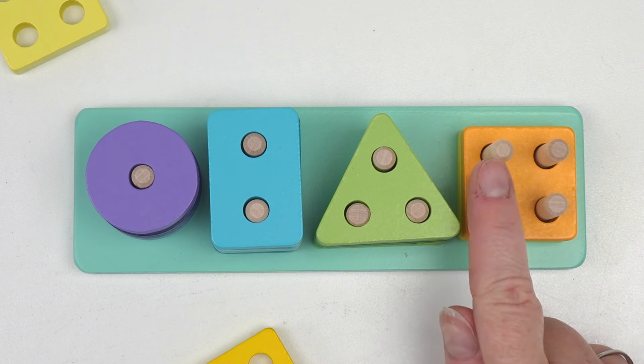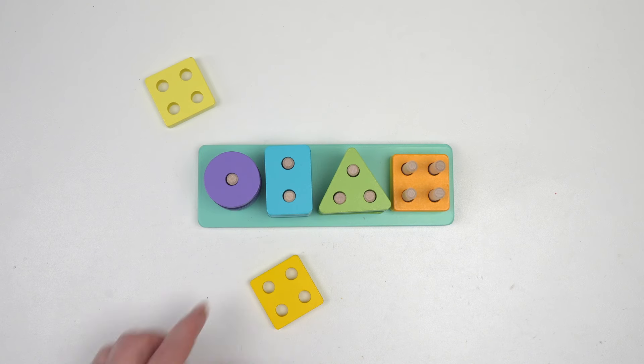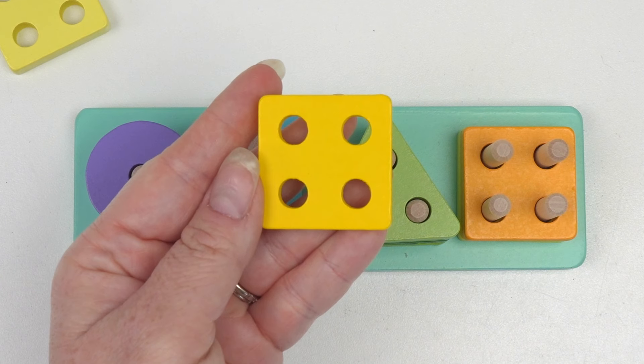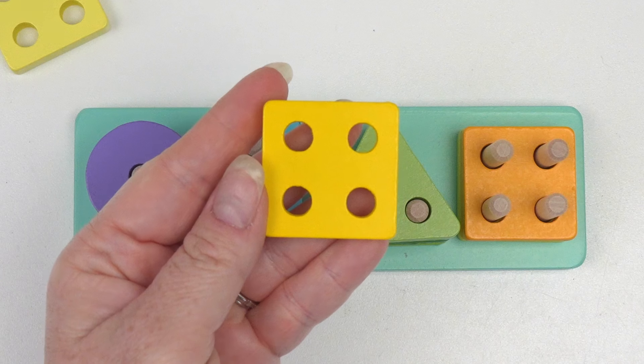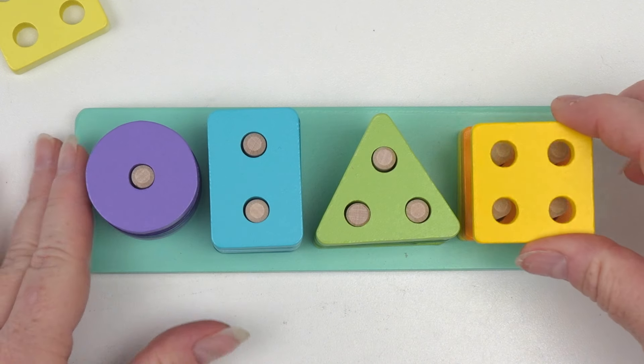Our last shape had one, two, three, four holes. And do you remember what this shape was called? A square! Good job!